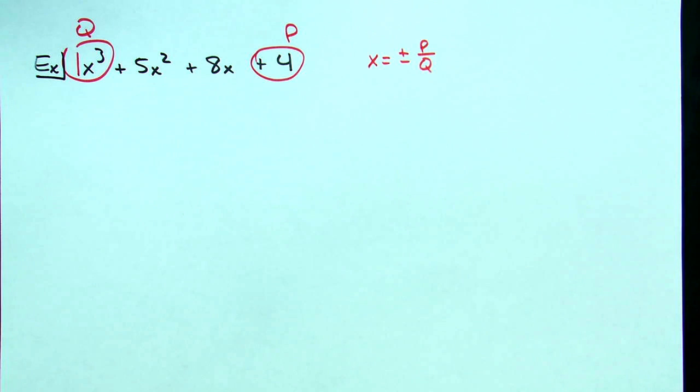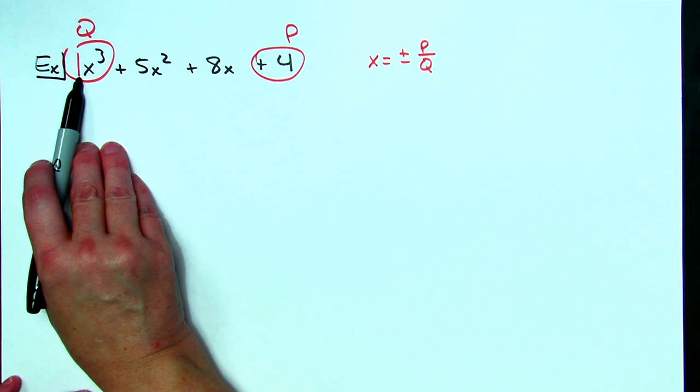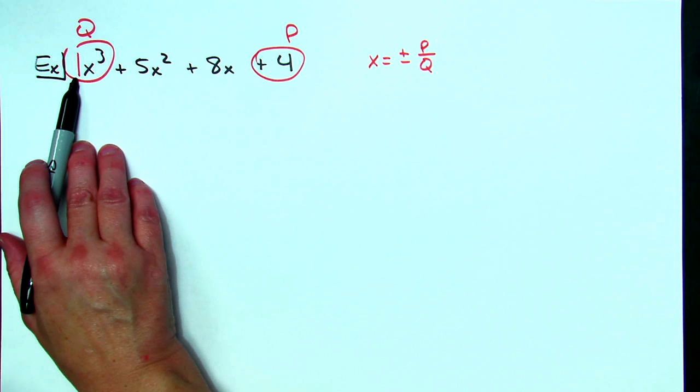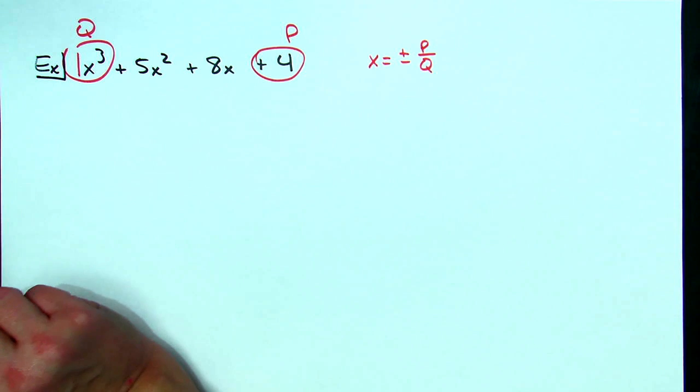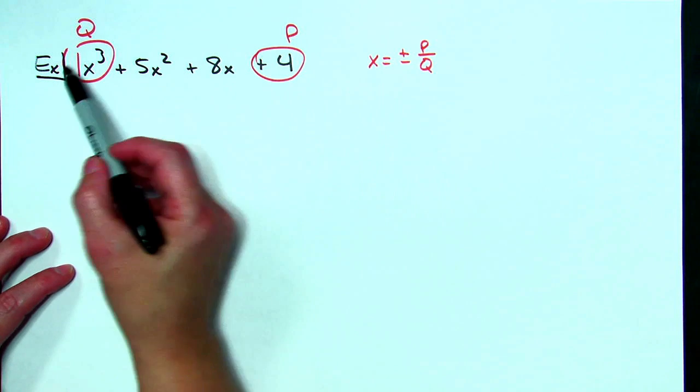For the ones that we do we're going to stick with a q of 1 because once you start adding this coefficient of 2 or 3 or 4 the number of possible roots goes up very very quickly and makes the problem very very difficult.